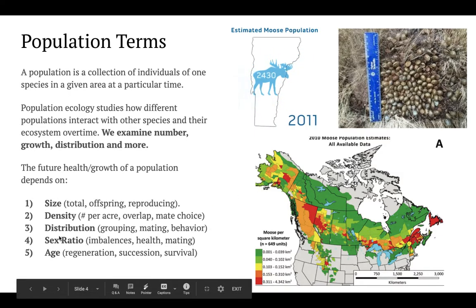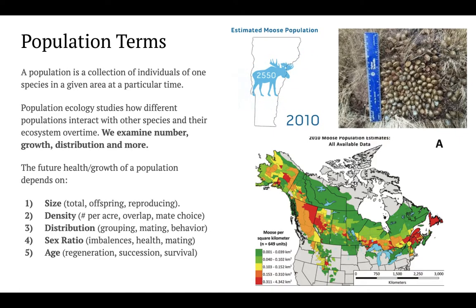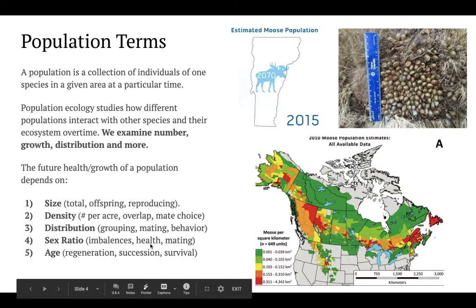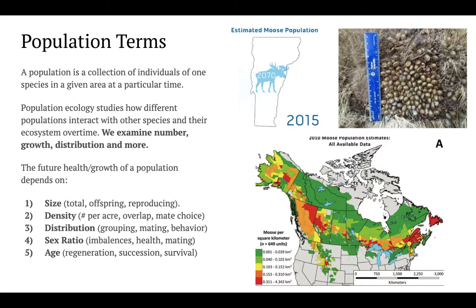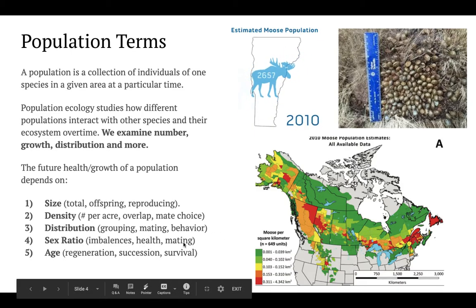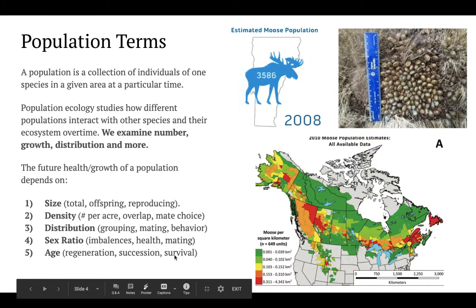Distribution of males and females gets us to sex ratio. Imbalances between genders can have big ramifications for reproductive success, influencing the health and mating strategies of populations. Don't assume a 50-50 male-to-female balance is actually ideal — in many populations, there tend to be more females than males due to innate mating strategies. Finally, age: regeneration and succession of generations, overall survival in terms of lifespan, how many individuals reach 5, 10, or 15 years — all important for understanding how a population changes over time.